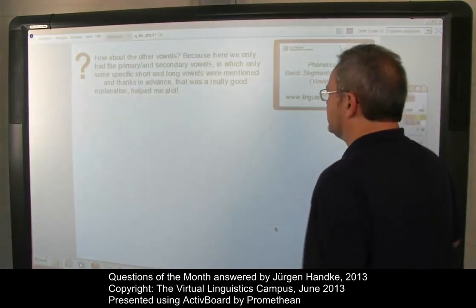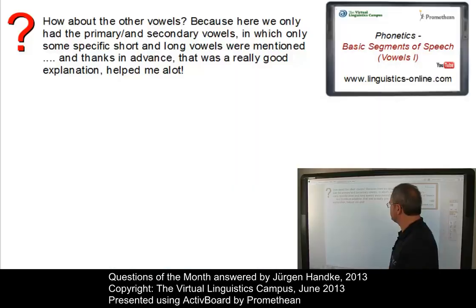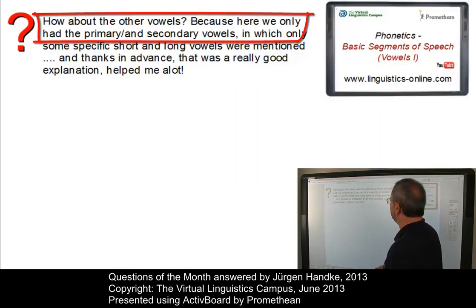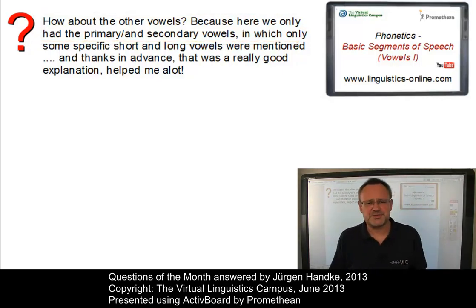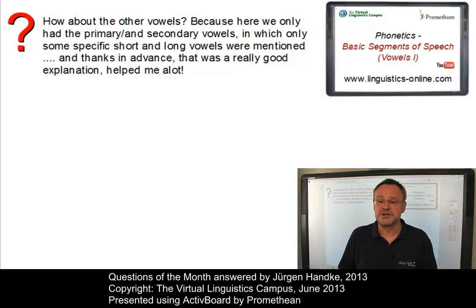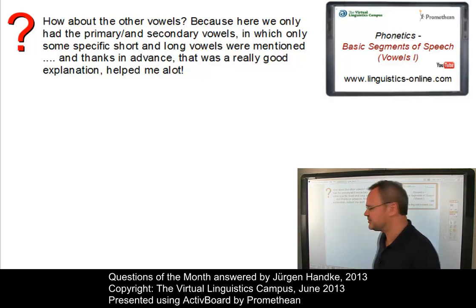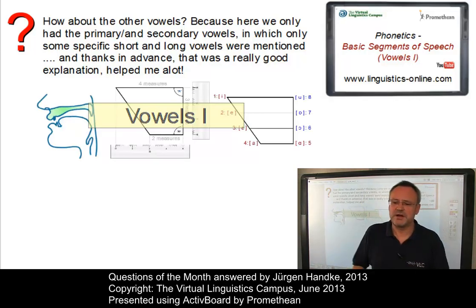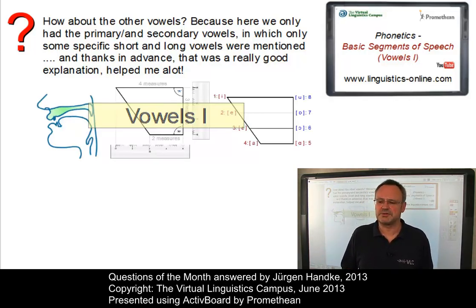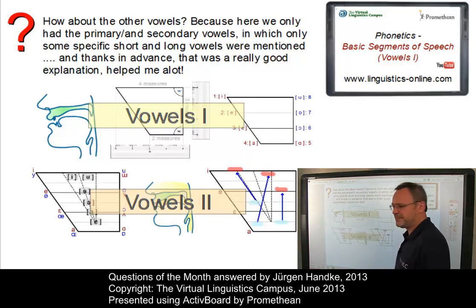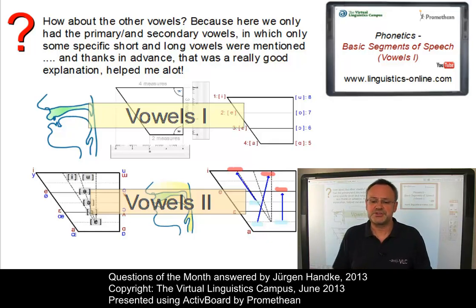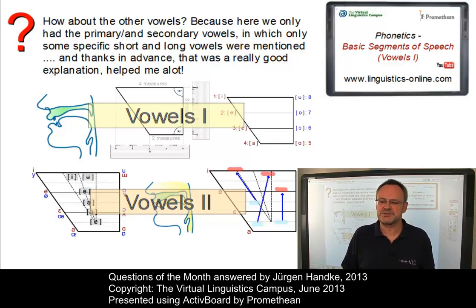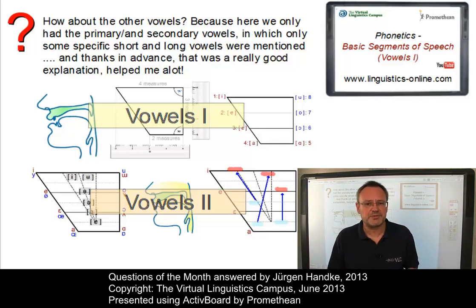Here is the first problem taken from the Phonetics video Basic Segments of Speech: how about the other vowels? Because here we only have the primary and secondary vowels. Well, this first question relates to a more elaborate treatment of vowels. In the first of our two videos, Basic Segments of Speech Vowels 1, I hoped to have outlined and demonstrated the system of cardinal vowels. And in a second e-lecture, Basic Segments of Speech Vowels 2, I expanded this approach by including the central vowels as well as types of vowels such as diphthongs, nasalized vowels and so on. I also related some language-specific vowels, for example from French or German, to the system of cardinal vowels.